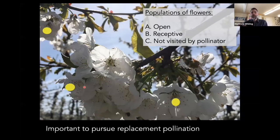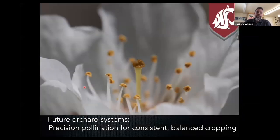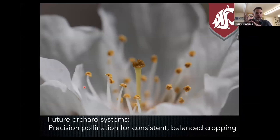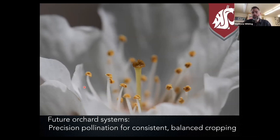The longer-term vision is what we're calling replacement pollination. In future orchard systems, we would utilize precision pollination for consistent and balanced cropping — orchards would no longer have pollinizers and would no longer use pollinators. We could directly pollinate the crop with artificial systems to control these processes and be less sensitive to environmental conditions and the other pressures exerted upon the traditional pollinizer-pollinator model.